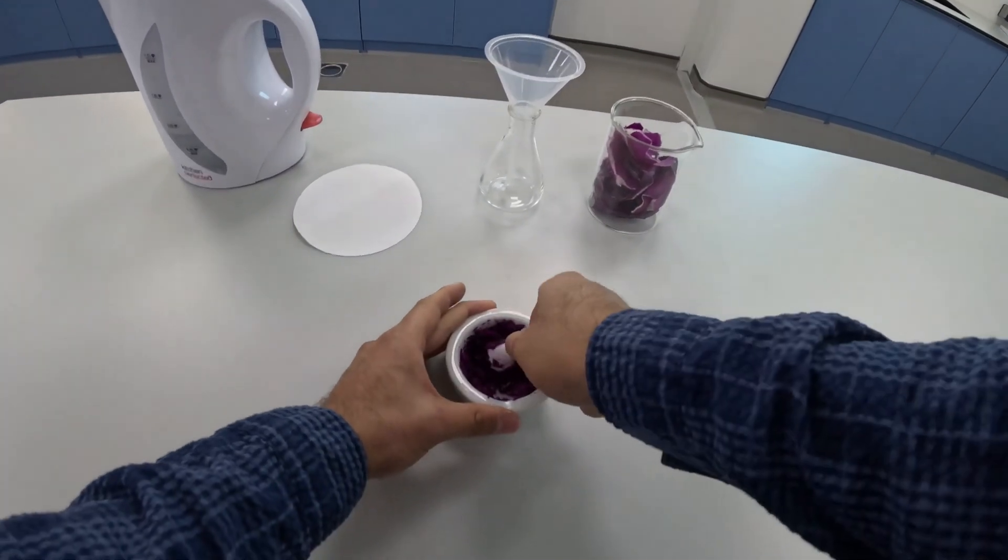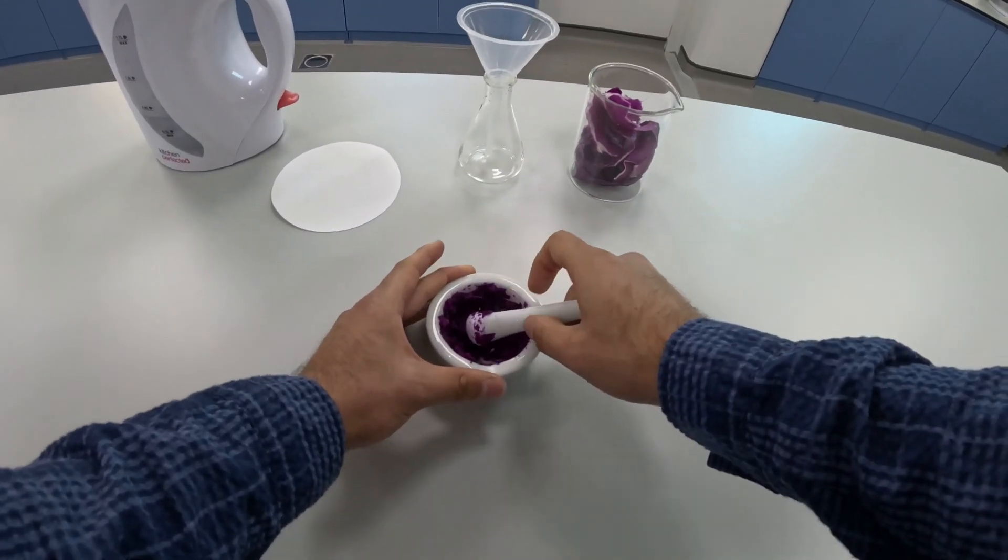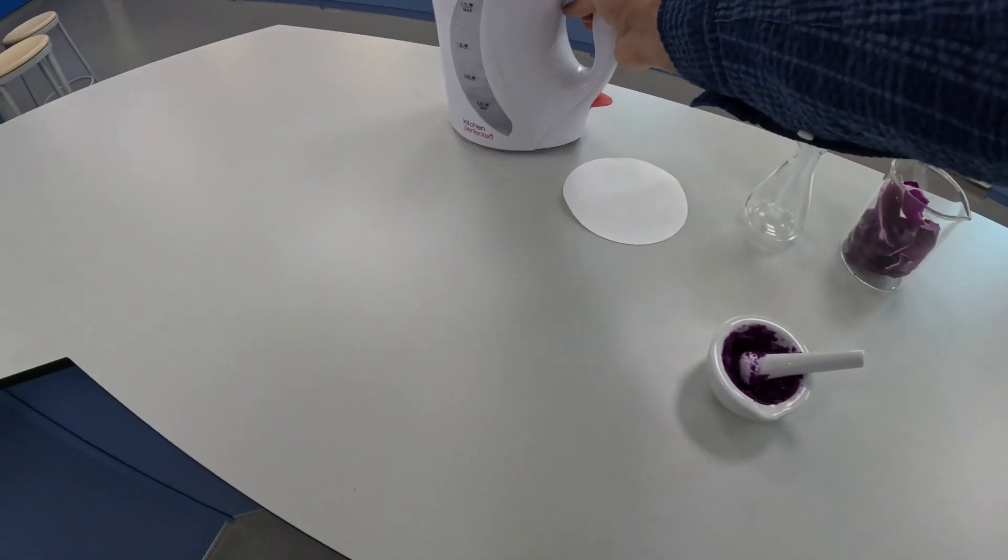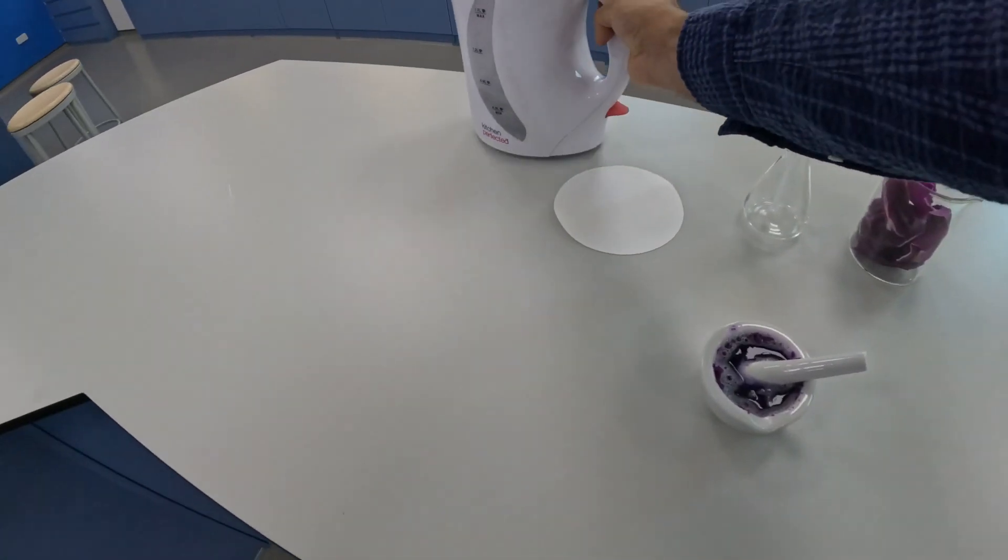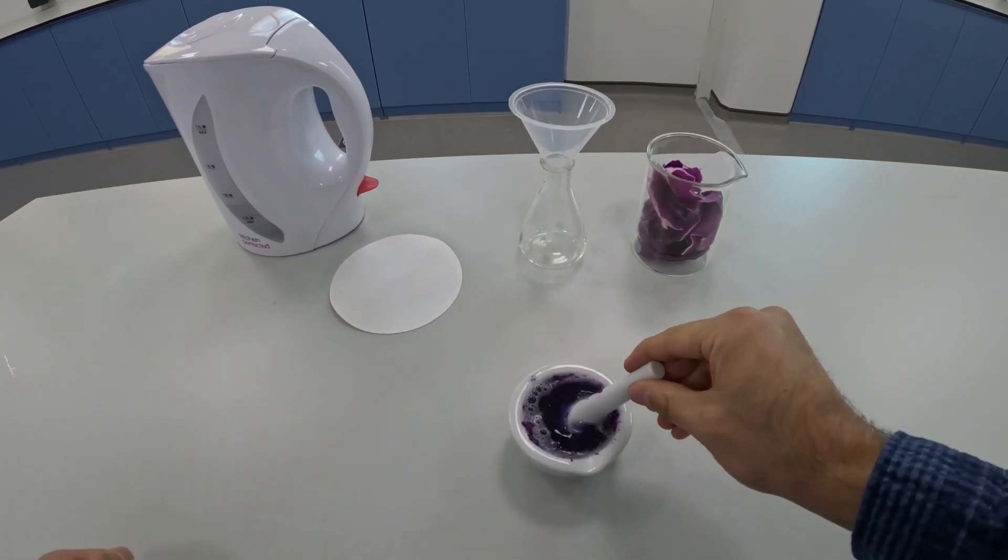Once the red cabbage is sufficiently crushed, you want to add some hot water and give it a little mix.